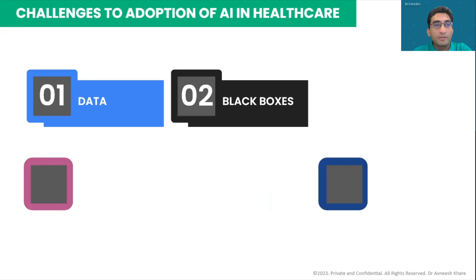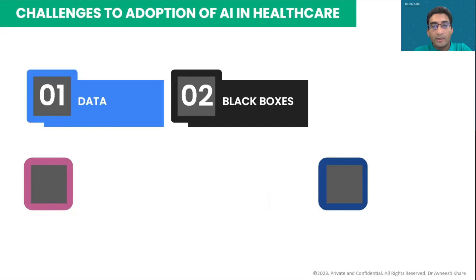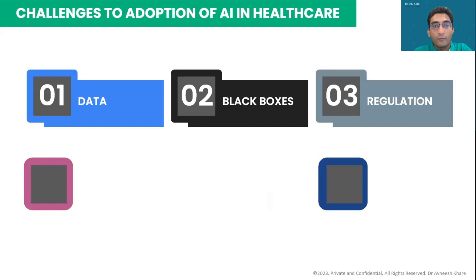Then there is the black box effect. With deep neural networks, we cannot understand how they are functioning inside, so clinicians are always worried about the results they give. Even patients, when told that the model predicted something but we don't know how, it creates a sense of mistrust and discomfort. There is more and more advocacy towards explainable AI — even if a model is less accurate but more explainable, we try to use such models in healthcare. Then, of course, regulations always lag behind technology, and the pace of AI is too fast for even regulatory agencies to keep pace.